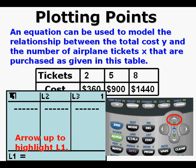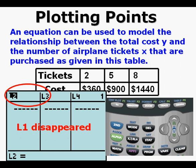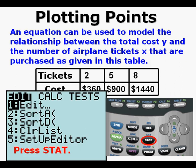I want to show you something important that causes trouble for new users. Arrow up to highlight L1 at the top of the column on the left and press DELETE. L1 disappeared — we don't see L1 anymore. If you press DELETE at the top of the column instead of CLEAR, the whole column completely disappears.